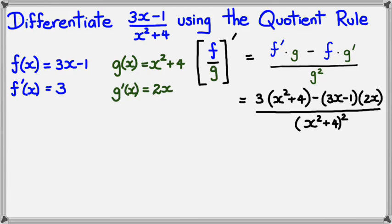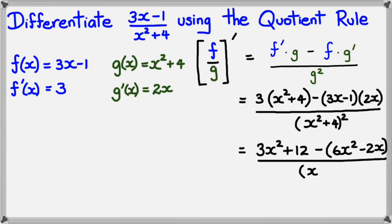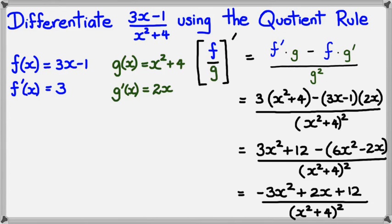Remember, in differentiation you do not have to simplify your answers all the way. You could leave your answer like this and it will still be correct. But I'll simplify: 3x squared plus 12, minus 6x squared minus 2x, all divided by x squared plus 4 squared. Simplifying gives minus 3x squared plus 2x plus 12, divided by x squared plus 4 squared. You could really just stop before this step, but it's always good practice to simplify further to improve your algebra skills.